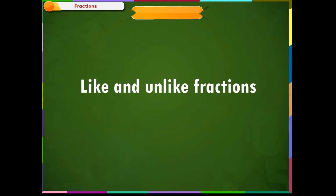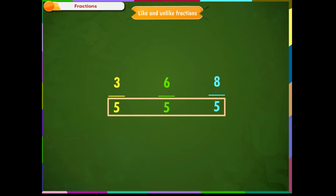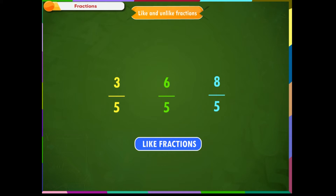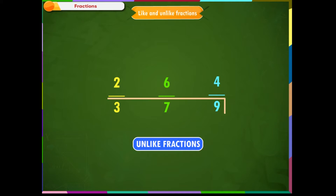Now let us see the difference between like and unlike fractions. Look at the fractions three by five, six by five, and eight by five. What do you see in common? All these fractions have the same denominator. Fractions which have the same denominator are called like fractions. Now look at these fractions: two by three, six by seven, and four by nine. There is nothing in common in them — such fractions that do not have common denominators are called unlike fractions. To check if fractions are like or unlike, we just need to see if their denominators are the same.